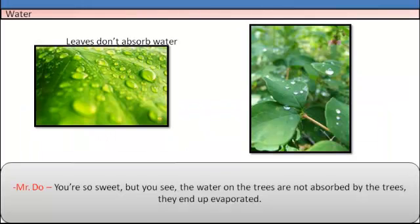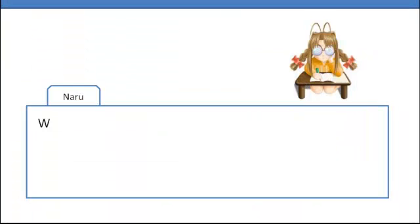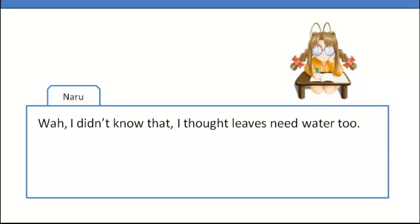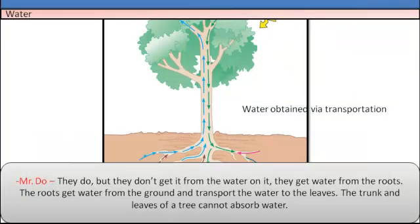You're so sweet, but you see, the water in the leaves are not absorbed by the tree. They end up evaporating. They do, but they don't get it from the water on it. They get the water from the roots. The roots get the water from the ground and transport the water to the leaves. The trunk and leaves of a tree cannot absorb water.